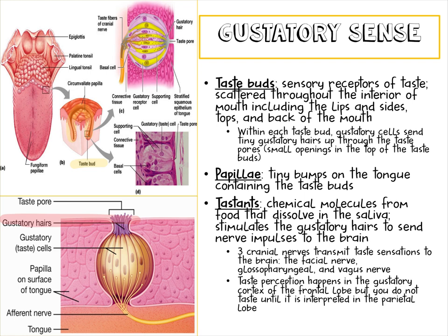There are three cranial nerves that transmit taste sensations to the brain: the facial nerve, the glossopharyngeal nerve, and the vagus nerve. Taste perception happens in the gustatory cortex of the frontal lobe, but you do not actually taste until it is interpreted by the parietal lobe. This is obviously very fast — we've all tasted something and spit it out almost immediately when we realized it could be harmful or simply tasted disgusting.